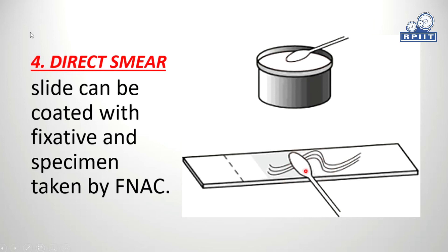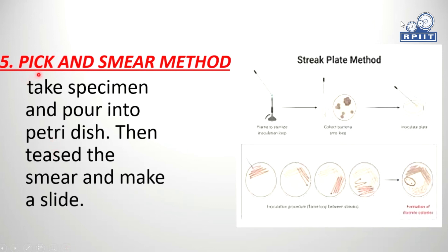Next is the pick and smear method. Take the specimen and pour it into a petri dish, then tease the specimen. Take a smear and make a slide. In this petri dish, first sterilize the inoculating loop using red heat, then dip it into the specimen. Dip the loop into the petri plate filled with specimen and prepare the smear. This is called the streaking method.